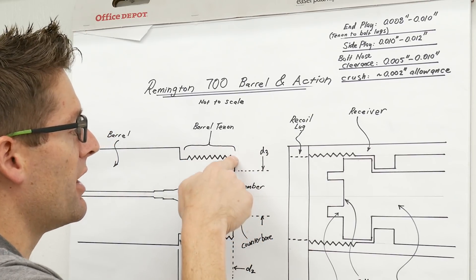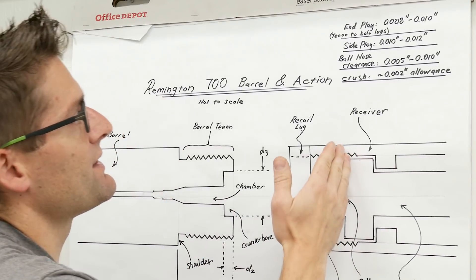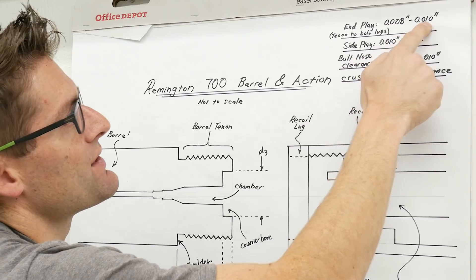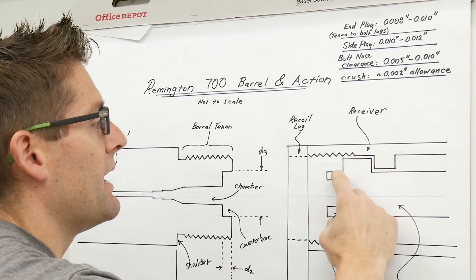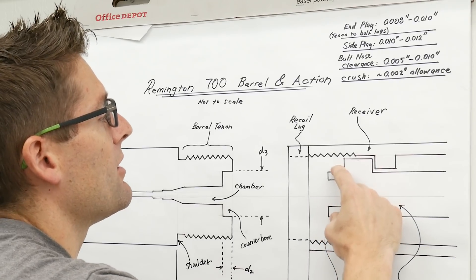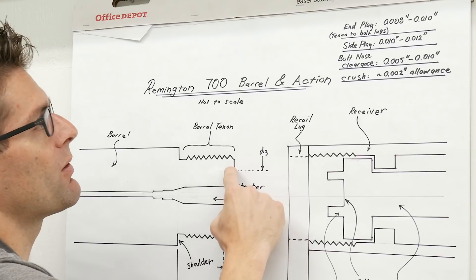And what we're going to do with some of this data is look at some of the tolerances that we're going to need so that we can calculate the values for different lengths and diameters. So end play from the end of the tenon to the bolt lug front face in this case is going to be eight thousandths to ten thousandths of an inch. This is after the crush. The side play is how much radial tolerance you have between the bolt nose and the counter bore diameter.